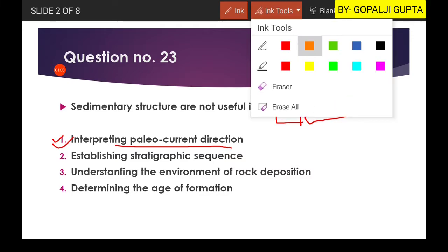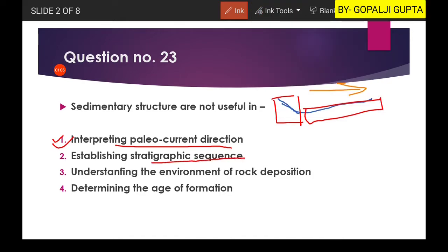The second option is establishing stratigraphic sequence. We can also use sedimentary structures for stratigraphic sequence. As we know, there are some structures which are found below the rock layer or at the bottom of any rock, and some structures which show the upper layer. So we can use this bottom surface and upper surface for stratigraphic sequence.